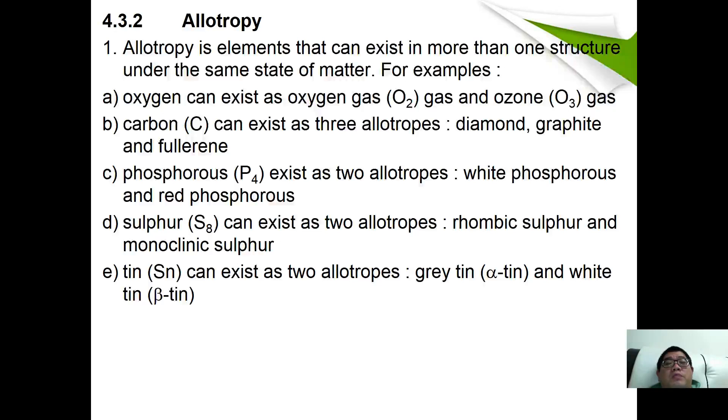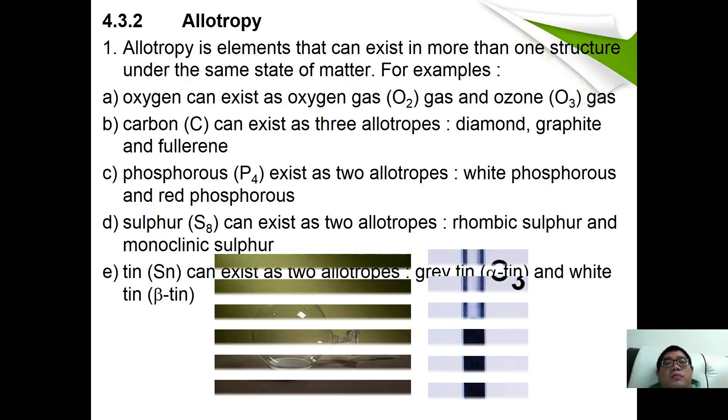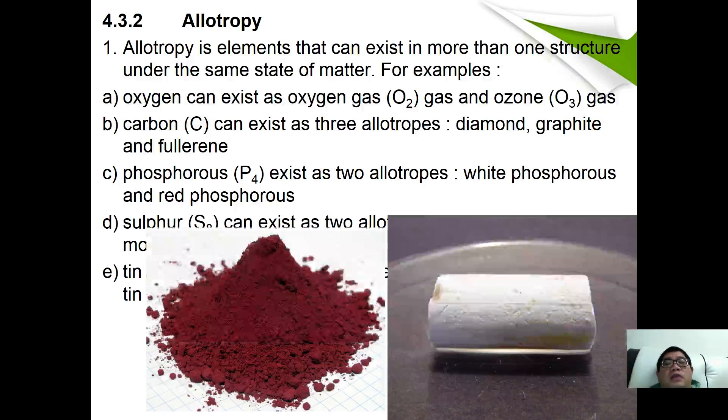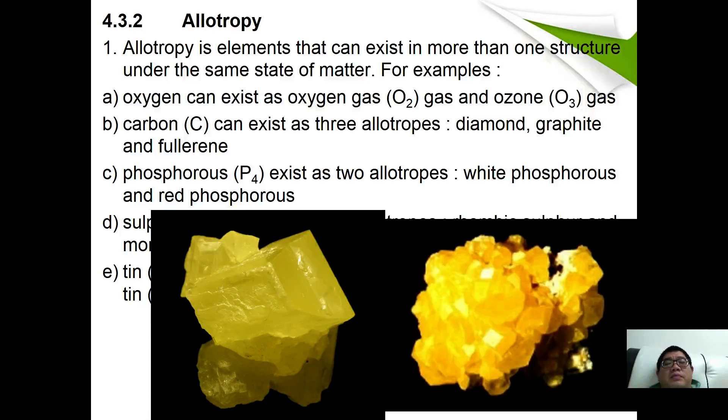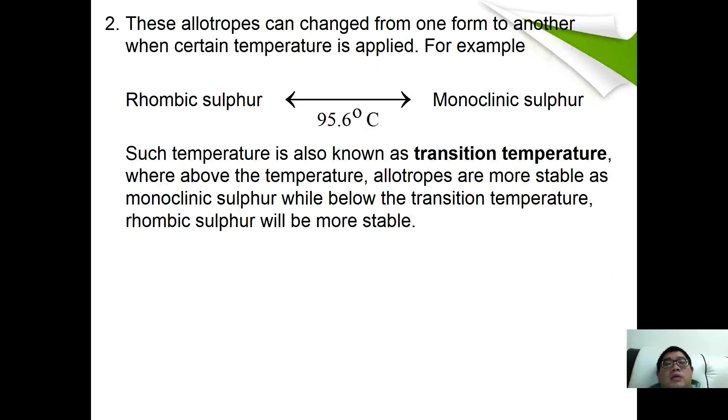This is what the structural looks like. Next we are going to look at allotropy. Allotropy is when an element exists in more than one structure under the same state of matter. For example, oxygen can exist as oxygen gas and ozone. Carbon can exist as diamond, graphite, and fullerene. Phosphorus can exist as white phosphorus and red phosphorus. Sulfur can exist as alpha sulfur and beta sulfur. And tin can exist as white tin and gray tin.